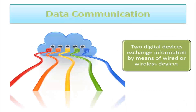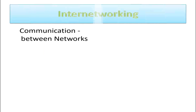Now, what is data communication? On a network, when two digital devices exchange information by means of wired or wireless devices, it is known as data communication. This communication, when it is further between networks, it is called inter-networking.